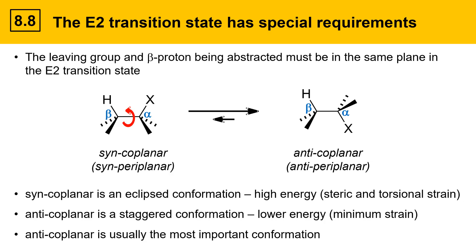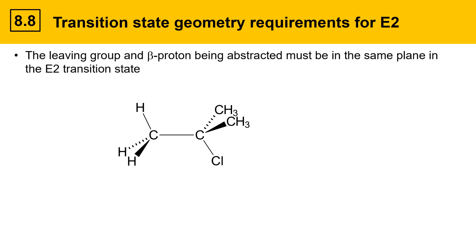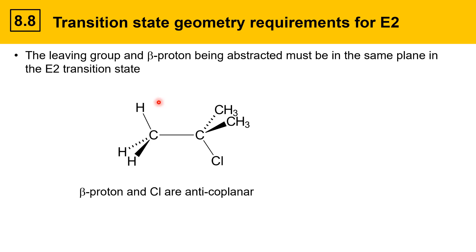So that's the one we're going to focus on primarily in Chapter 8. The transition state geometry requirements for the E2 reaction require the leaving group and the beta proton being abstracted to be in the same plane. Here's an alkyl halide example with the correct geometry for undergoing an E2 reaction — we have our alpha position with a chlorine leaving group and a beta position with a proton that lies in the same plane as the chlorine. This is an anticoplanar relationship, and this beta proton is the one that will get deprotonated.